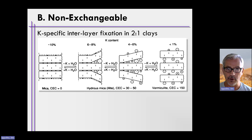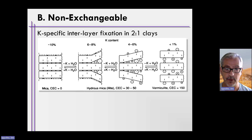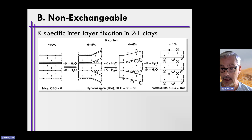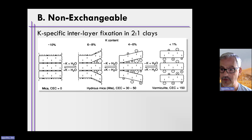That potassium ends up first in the interlayer of two-to-one-type clays. That potassium is fixed in the interlayer. This picture illustrates that — we have a mica that contains potassium as part of the mineral structure itself. When this weathers, two-to-one-type clays start to form, like illites, montmorillonite, or vermiculite. Micas have no CEC, and as they break down into two-to-one-type clays, potassium starts ending up and is locked in the interlayer.